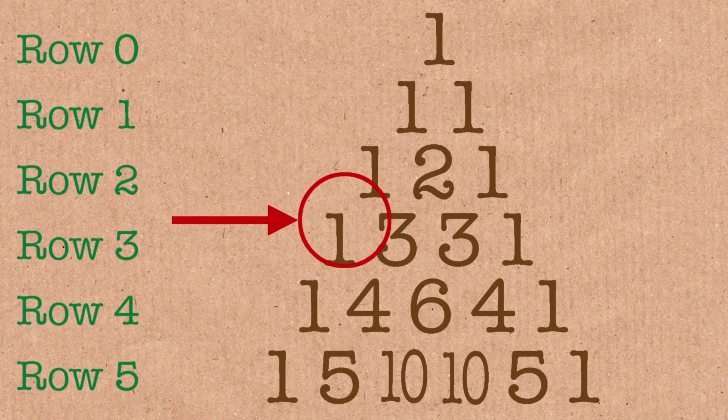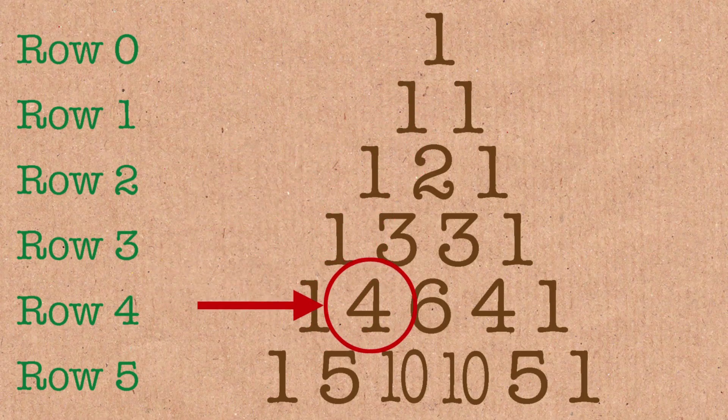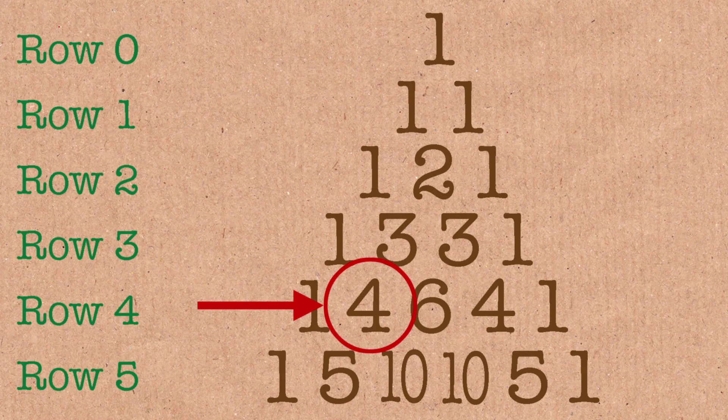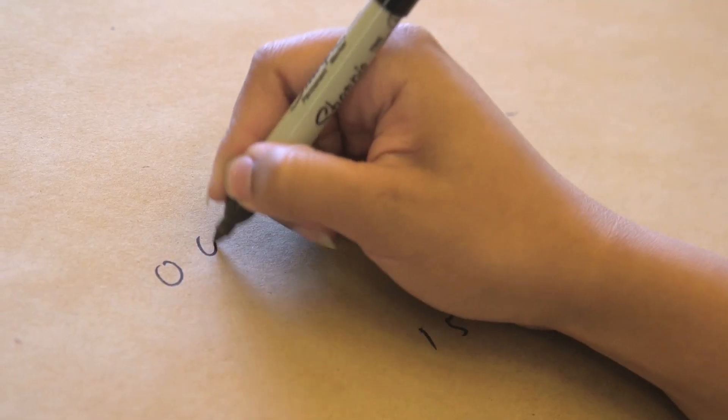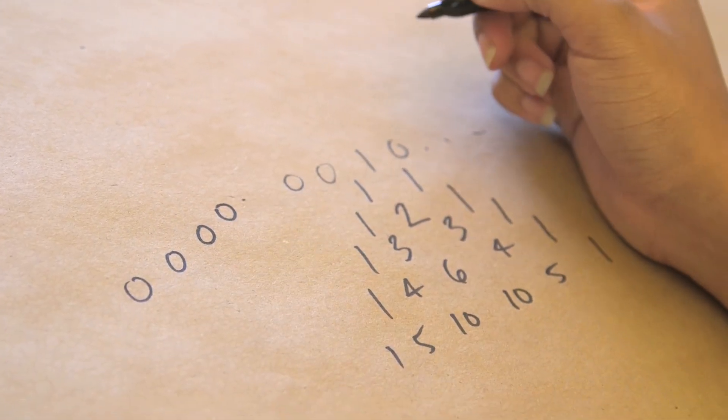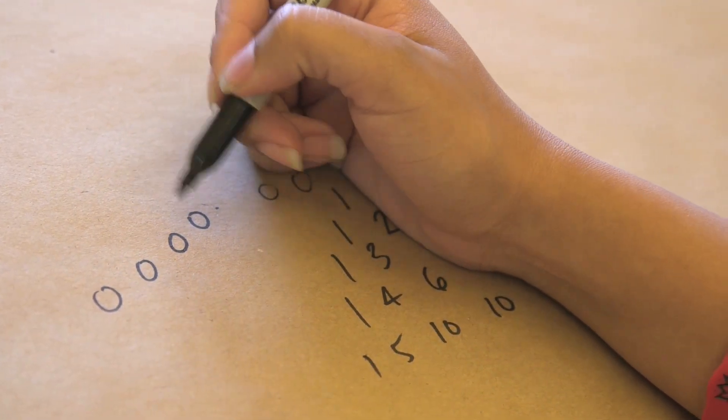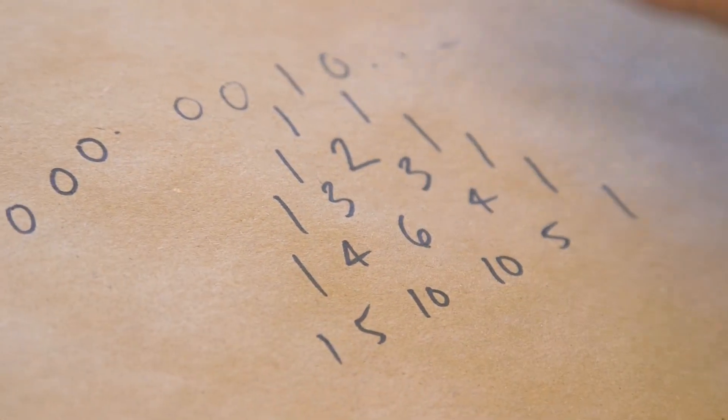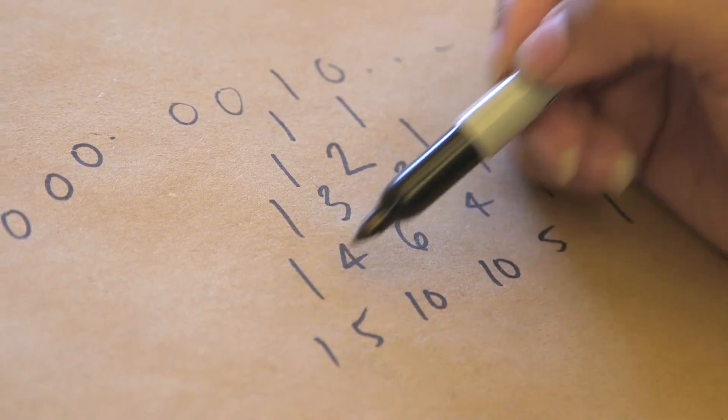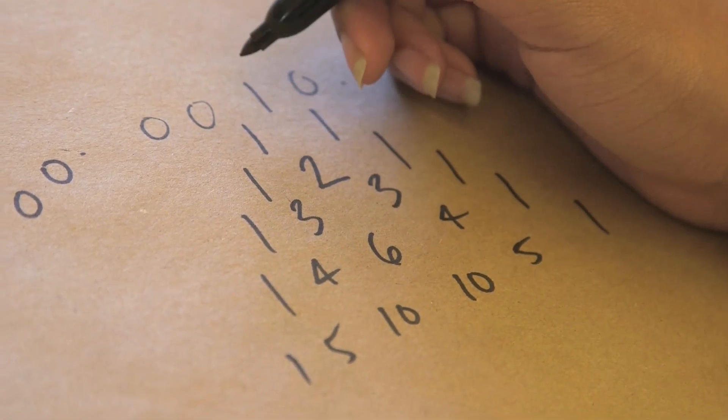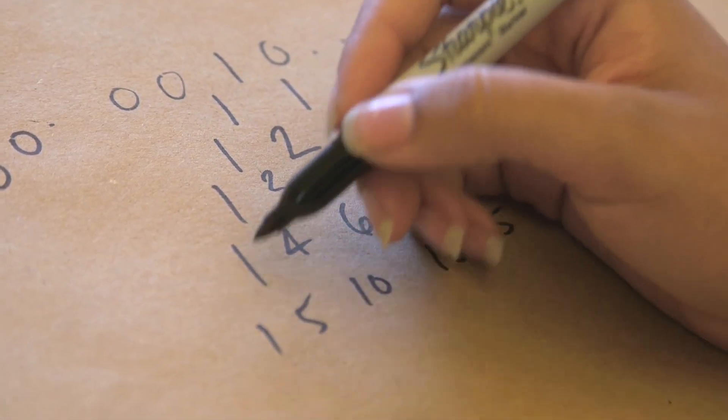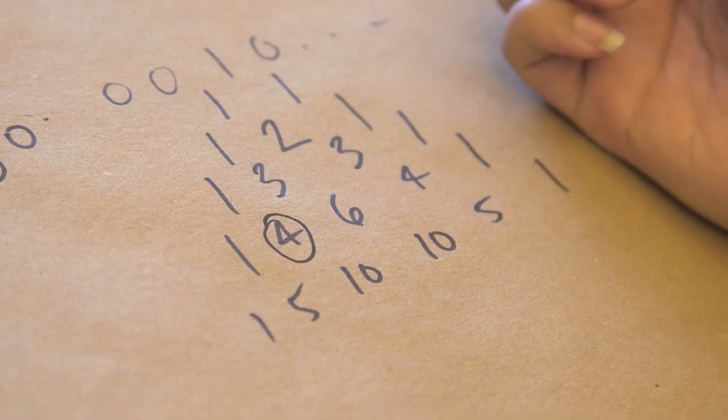So if I have n things, in particular let's say I have four things and I want to choose let's say one of them, then I go to the fourth row, I move over one, and that's how many ways I can do it, four ways. If I have four circles and I want to only choose one of them, there are four ways I can do that. I can choose this one, I can choose that one, I can choose that one, I can choose that one. And it turns out Pascal's triangle says if I go down to the fourth row, where this is the zeroth row, and I choose one thing so I move one over, then that's exactly how many ways I can do it.